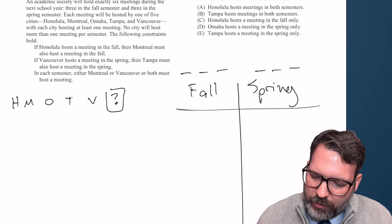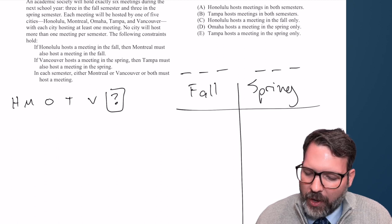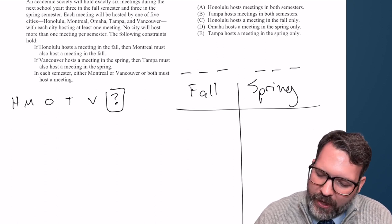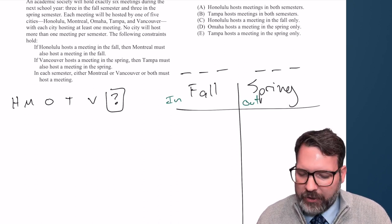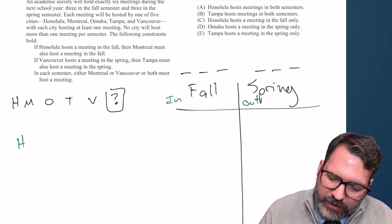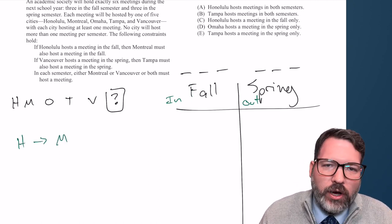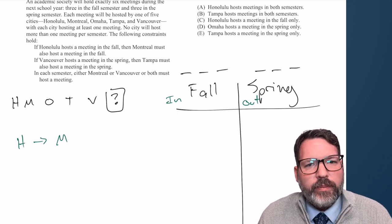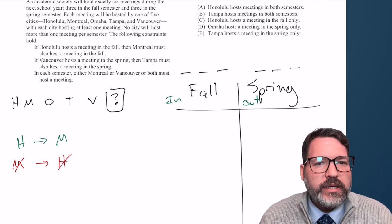Take the first clue: if Honolulu hosts a meeting in the fall, then Montreal must also host a meeting in the fall. If this were a pure in-and-out game where fall is 'in' and spring is 'out,' we could simply say: if H is in the fall, M is in the fall — and then immediately do the contrapositive: if M is out, H is out.